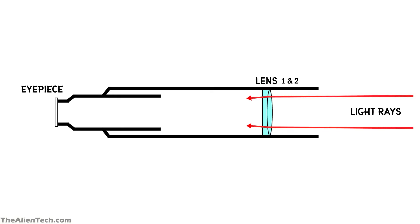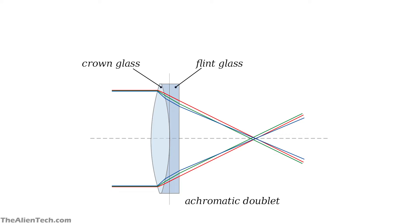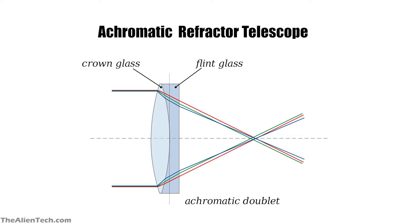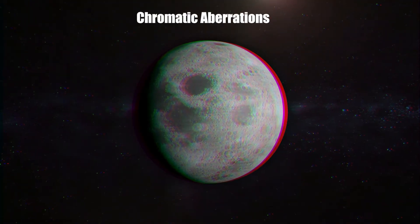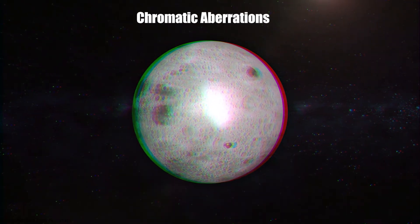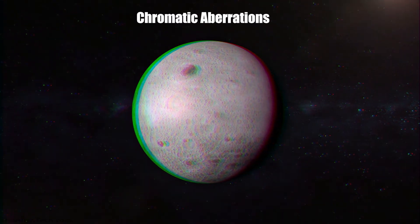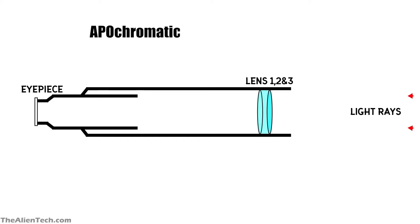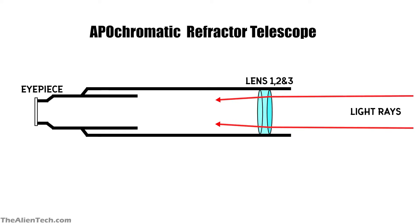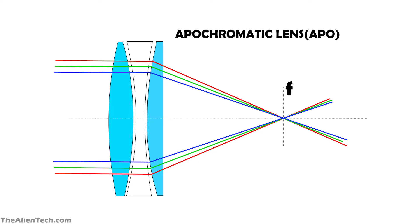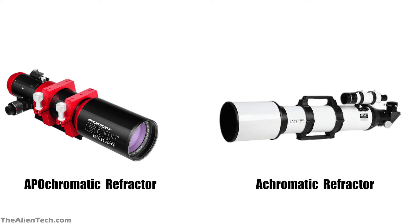To reduce chromatic aberrations, a second lens is used, making it a doublet refractor telescope. An achromatic refractor focuses two wavelengths of light at a single point, resulting in fewer chromatic aberrations, though some may still be noticeable. To eliminate those remaining aberrations, an apochromatic refractor focuses all three wavelengths at one single point, typically using three lenses — though advances in lens technology allow this with just two lenses. The apochromatic refractor is more expensive than the achromatic refractor.